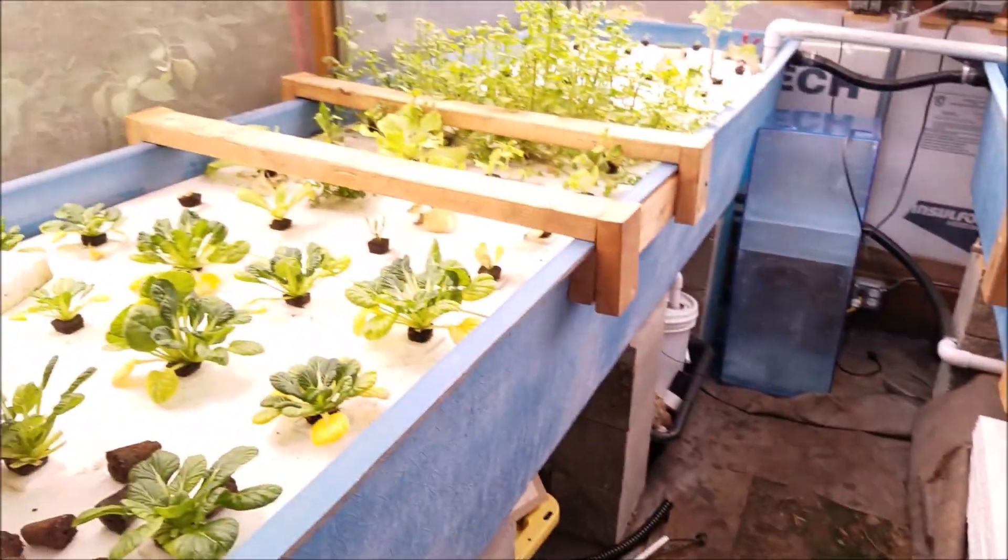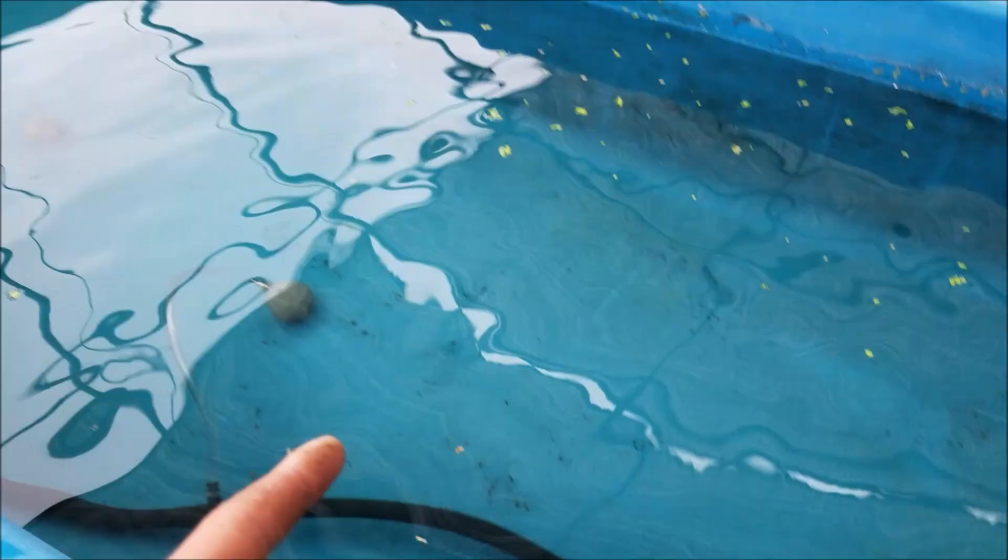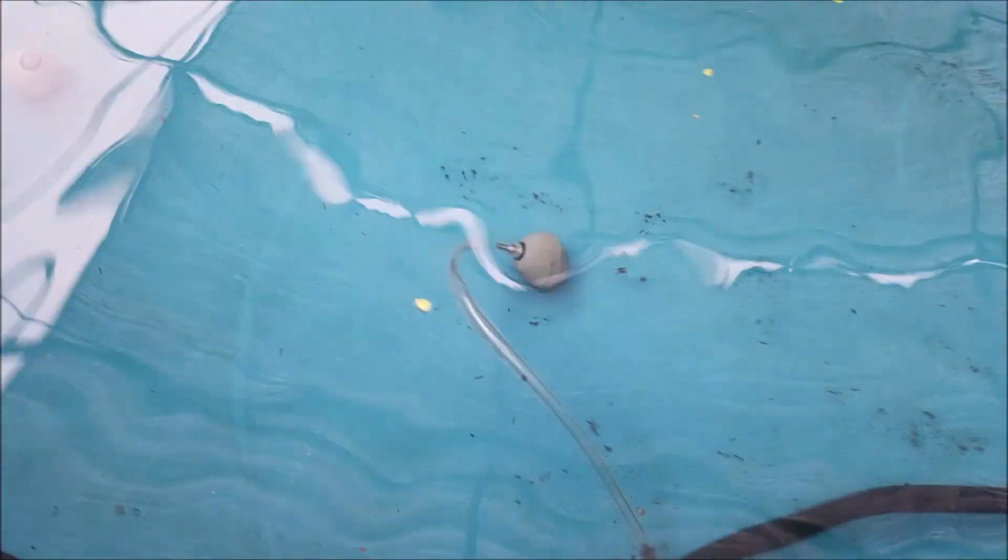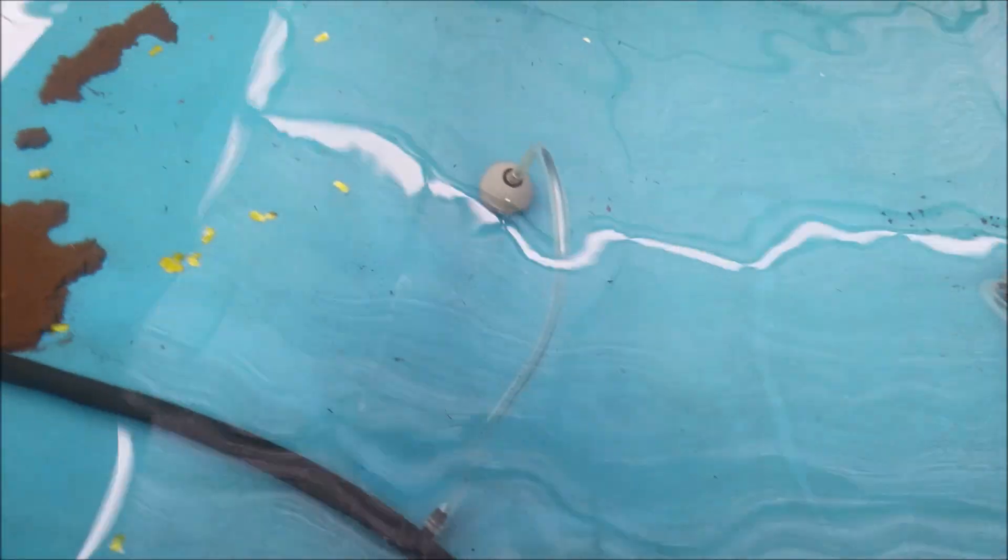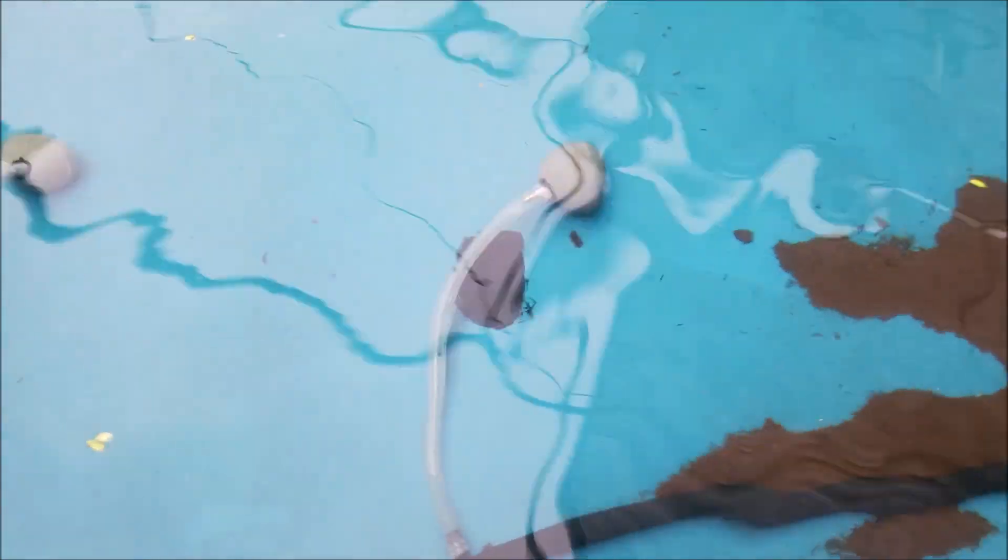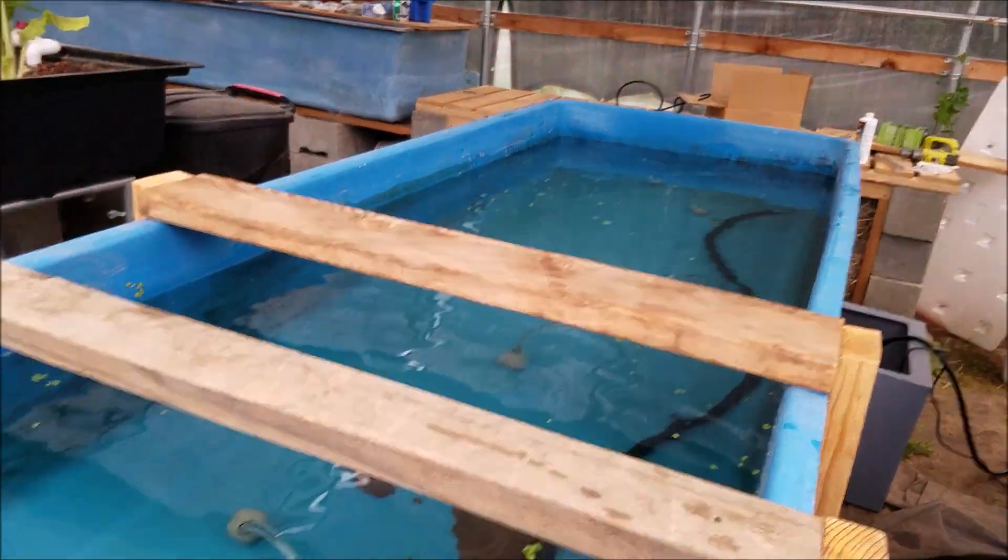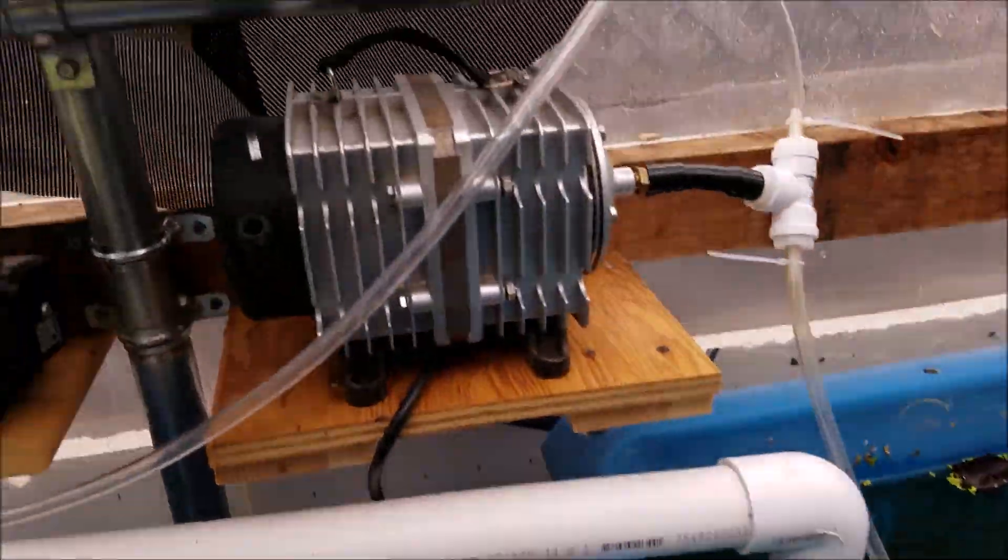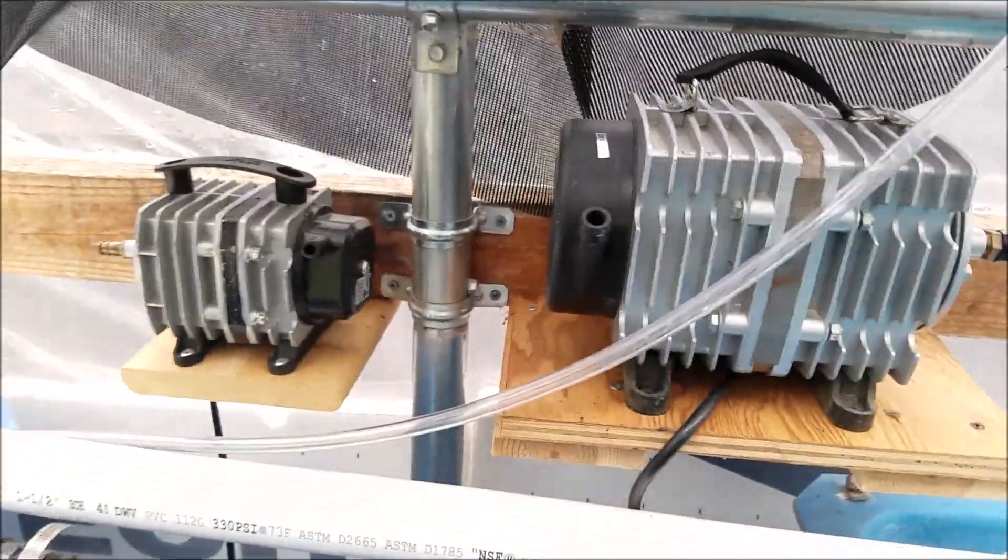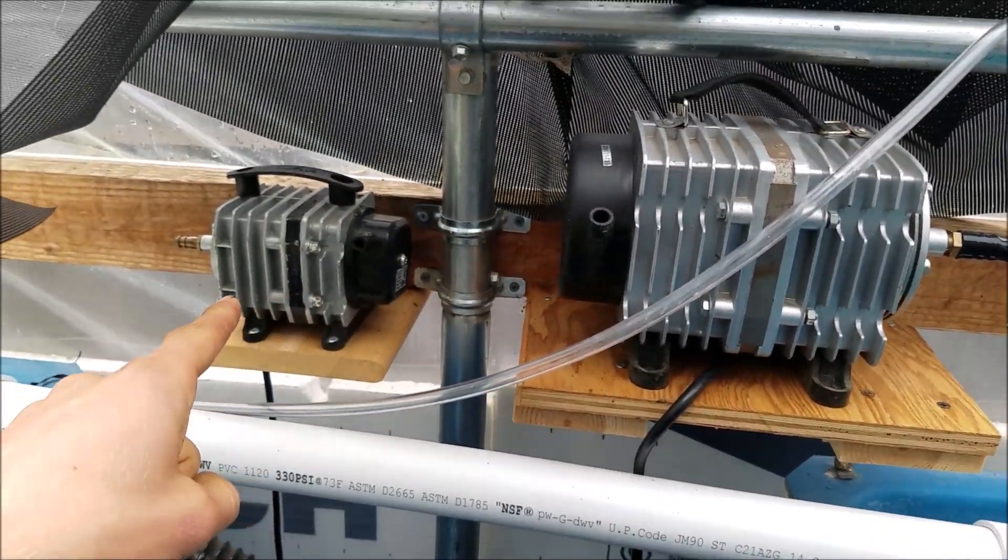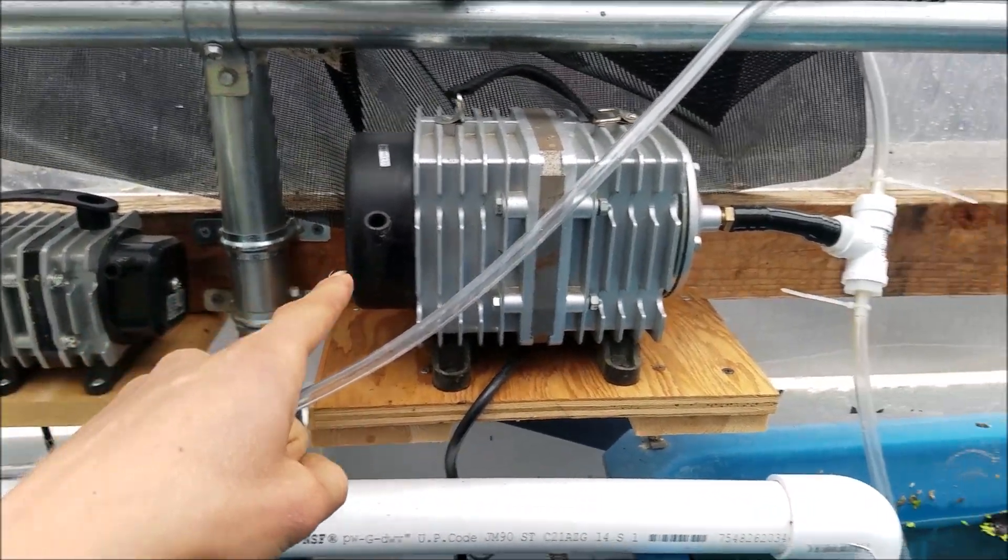So I have this in both of the grow beds, this one and then as well as this one. So it's basically the pipe going at the bottom. I have seven of these air stones in here, and the pump I'm using is now this bigger one instead of the smaller one I had before.